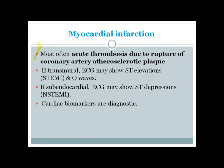Myocardial infarction is most often due to thrombosis as a result of rupture of a coronary artery atherosclerotic plaque. This rupture invites platelets, which form a thrombus causing the infarction. In transmural infarction, the ECG commonly shows ST elevation and Q waves — this is called ST elevation MI. If the infarction is subendocardial, the ECG shows ST depressions, called NSTEMI or non-ST elevated MI.